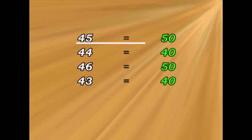Forty-five, that's five, you go up to fifty. Forty-four, that's four, you go down to forty. Forty-six, six is five or more, you go up to fifty. Forty-three, three is four or less, you go down to forty. So forty-five becomes fifty, forty-four becomes forty, forty-six becomes fifty, forty-three becomes forty.